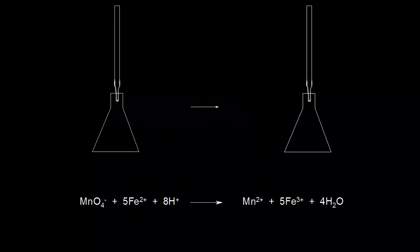We've already seen how to do an acid-base titration. Now let's look at a redox titration. Let's say we have a solution containing iron 2+ cations, and we don't know the concentration of those cations. We can figure out the concentration by doing a redox titration.